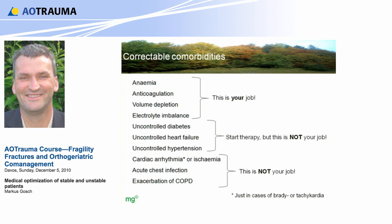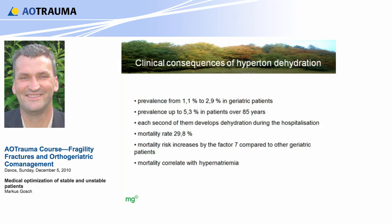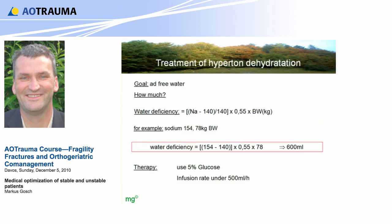Why is dehydration so important? The prevalence is quite high — up to 3% in geriatric patients and up to 5% in the oldest group. Each second patient develops dehydration during hospitalization, and the mortality rate is up to 30%, increasing by a factor of 7 compared to other geriatric patients. What can you do? Give the patient half a liter of 5% glucose infusion in the first hour. It's no problem — it's very easy, but you have to do it.